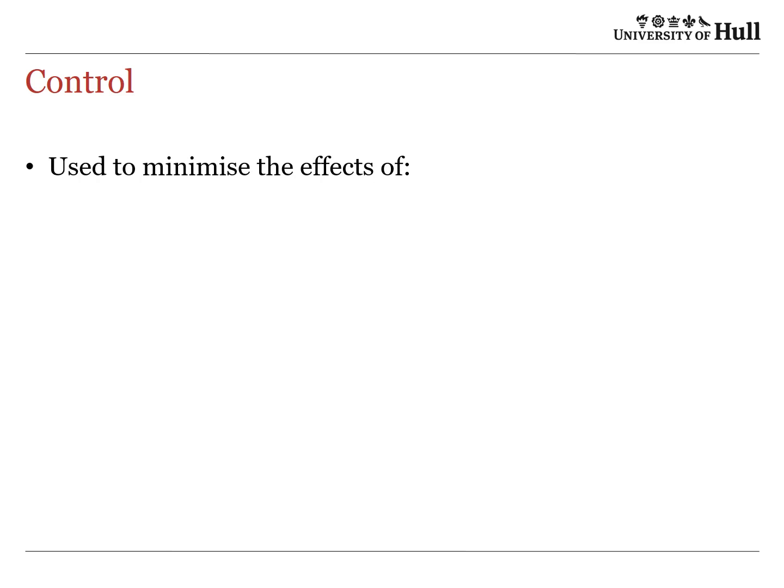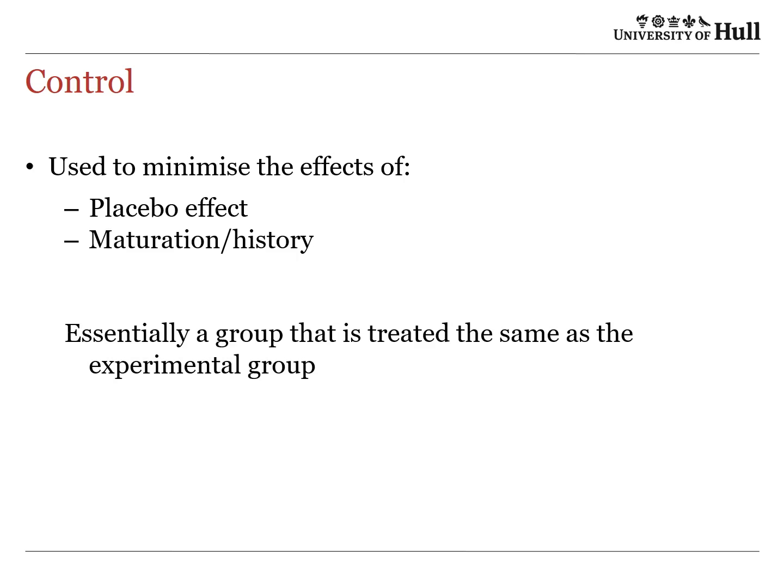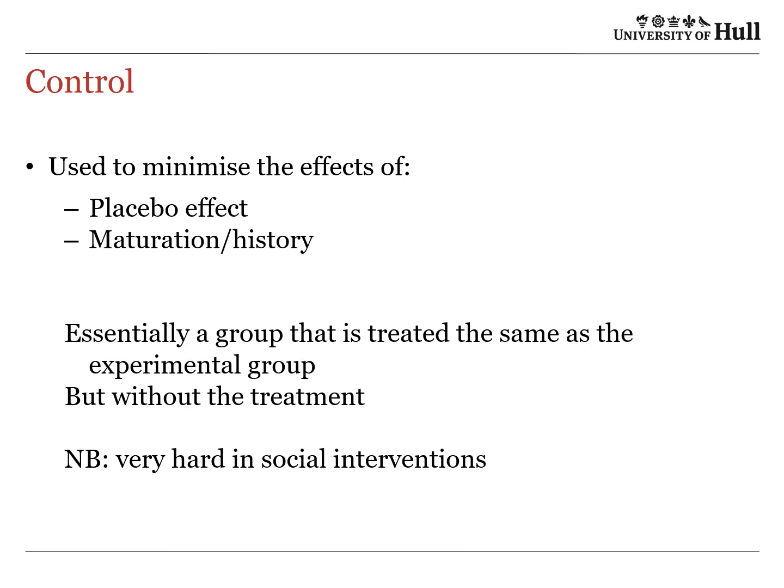Control is used to minimise the effects of the placebo effect, maturation, or history. The placebo effect is an effect due simply to being part of the study, nothing to do with the treatment being investigated. Maturation or history takes into account that many people, whatever's wrong with them, will get better anyway. A control group is essentially a group treated the same as the experimental group but without the treatment. This is very hard in social interventions.